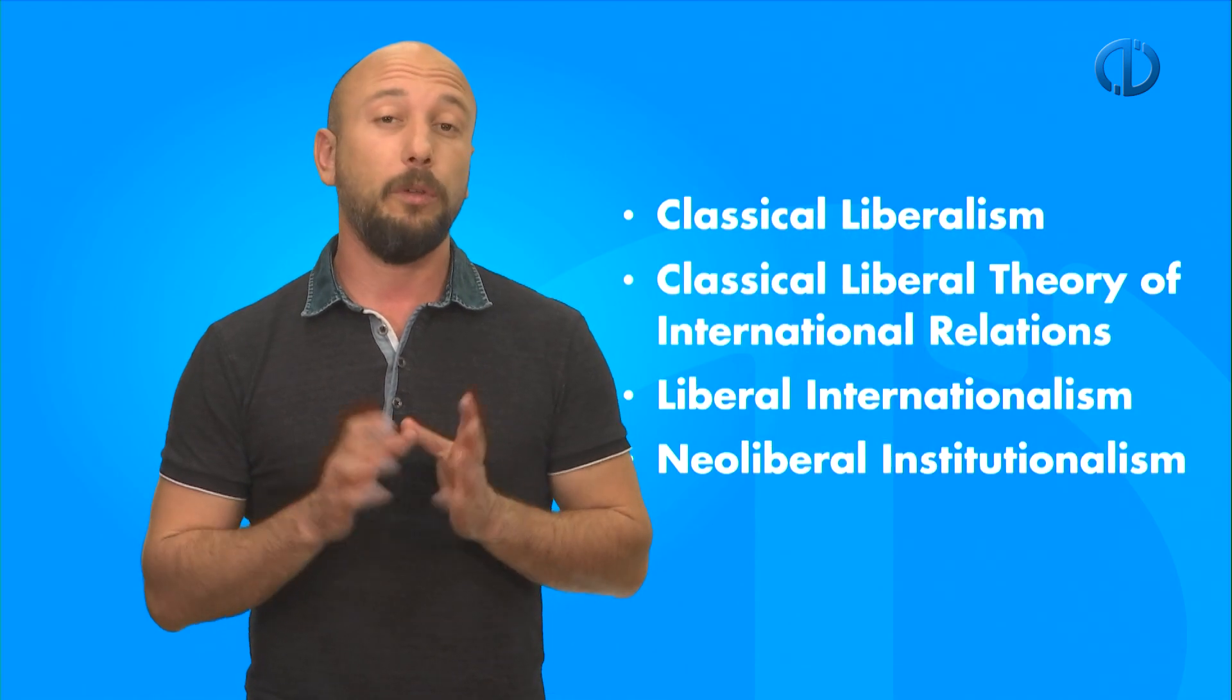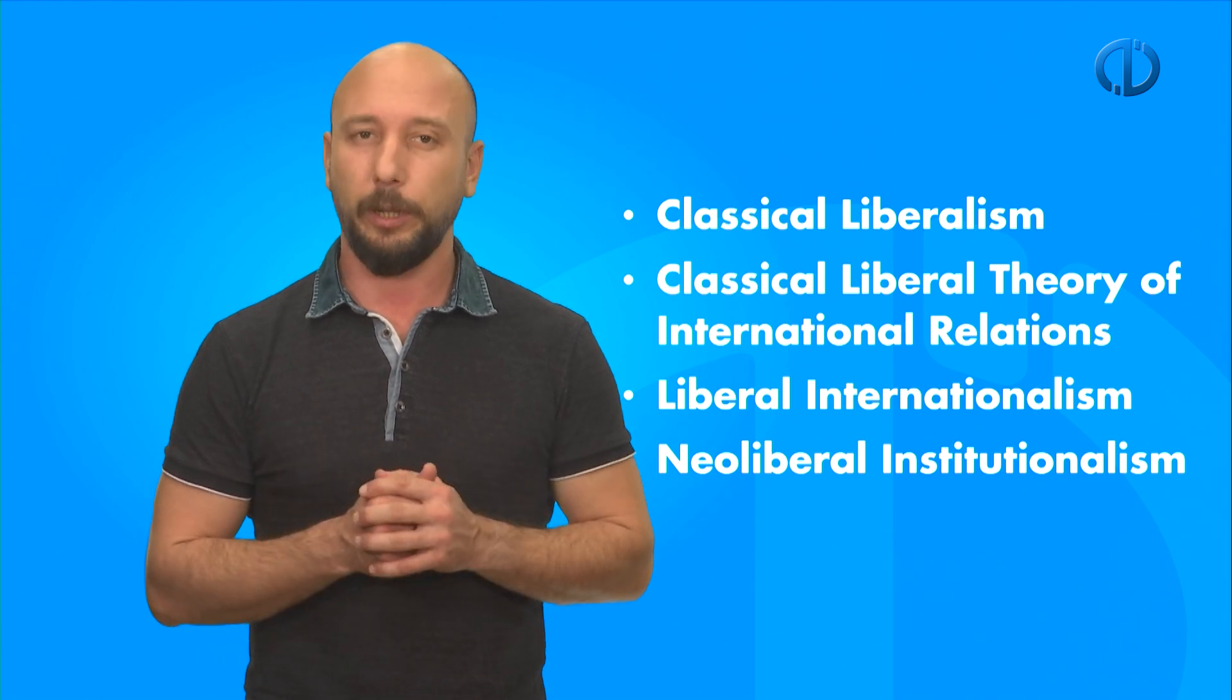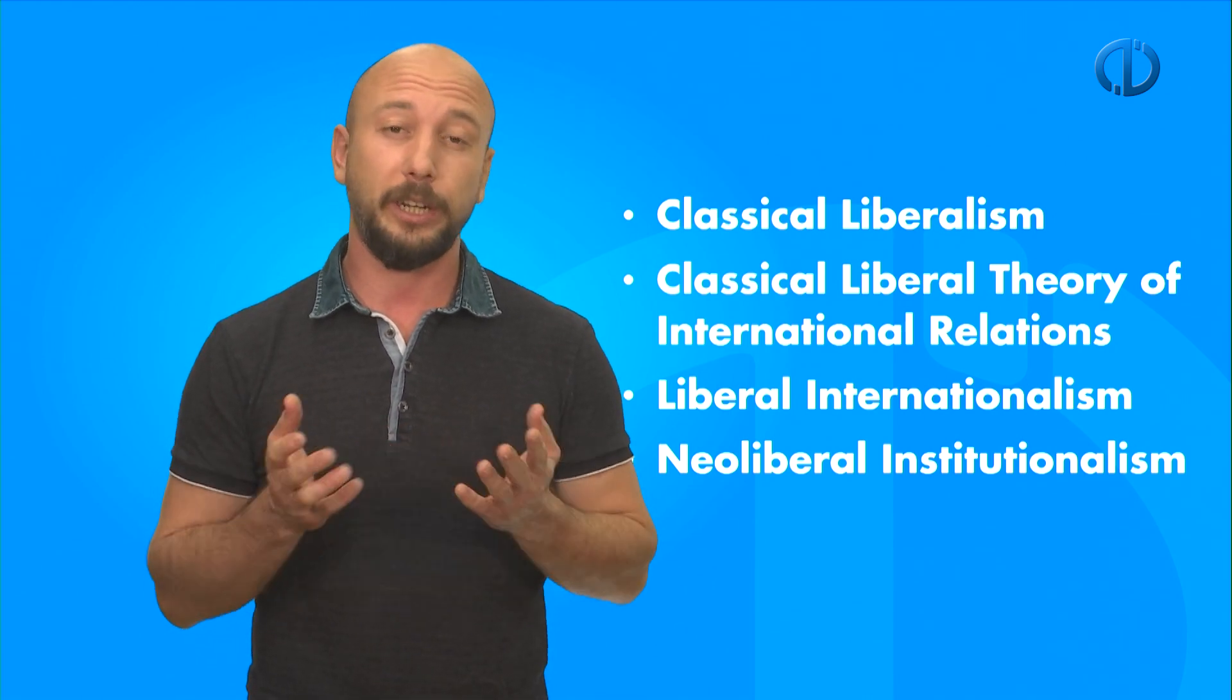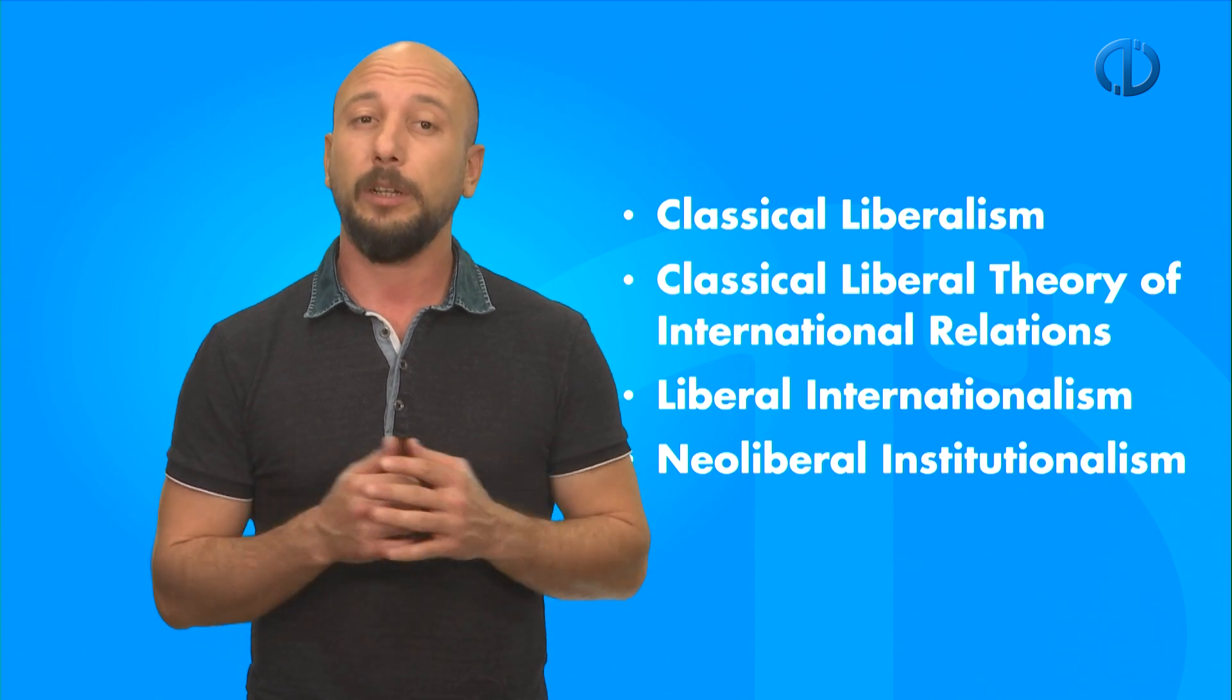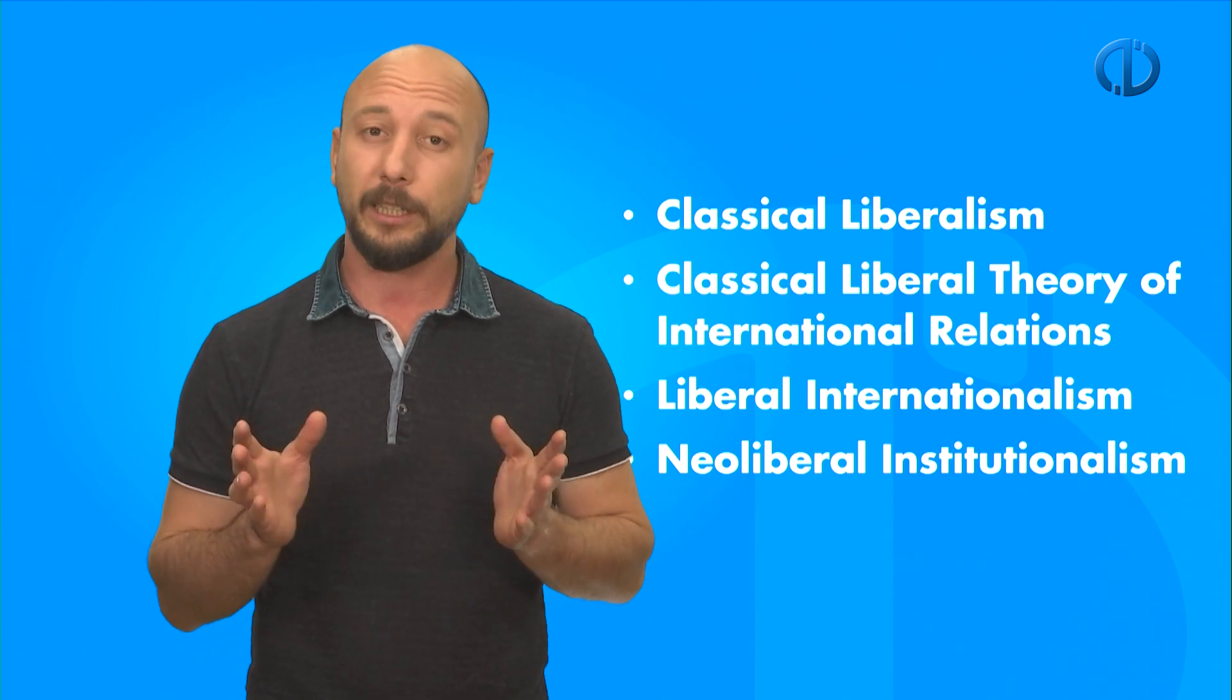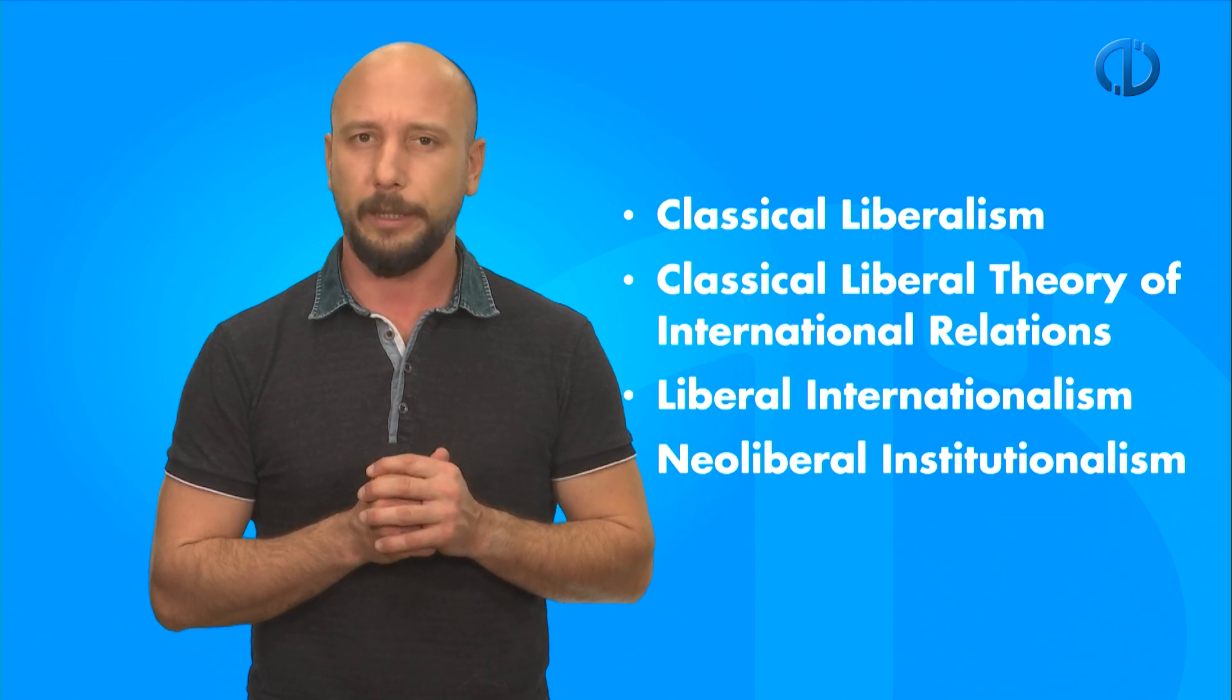In this chapter, we will firstly discuss Classical Liberalism, then Classical Liberal Theory of International Relations and Liberal Internationalism, and lastly, Neoliberal Institutionalism. Let's start with Classical Liberalism.